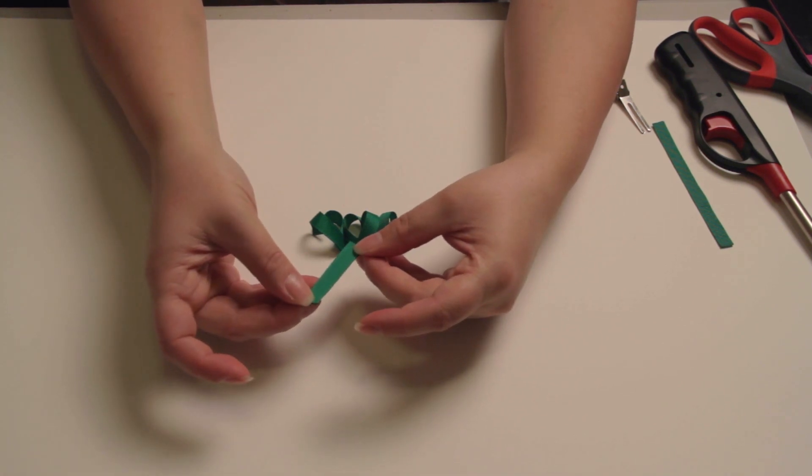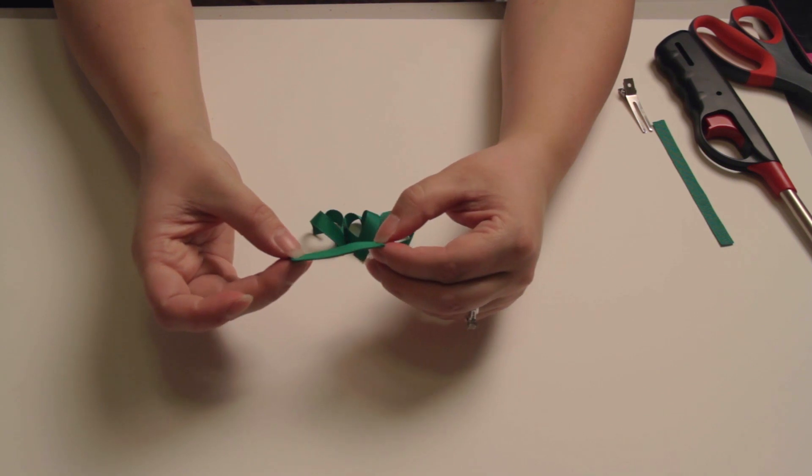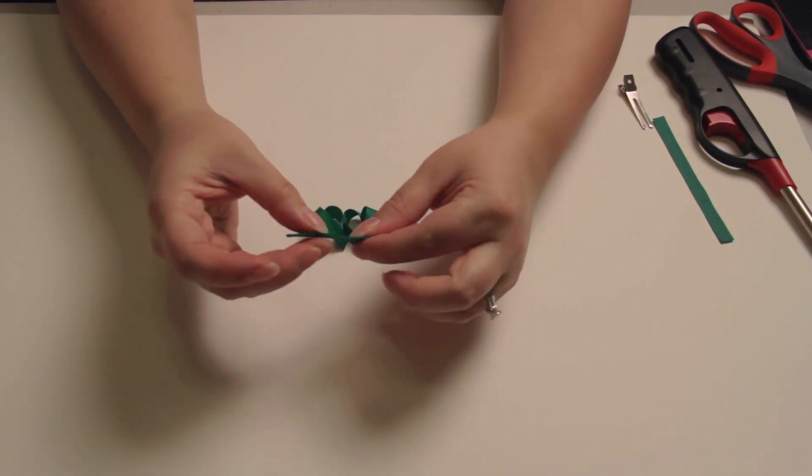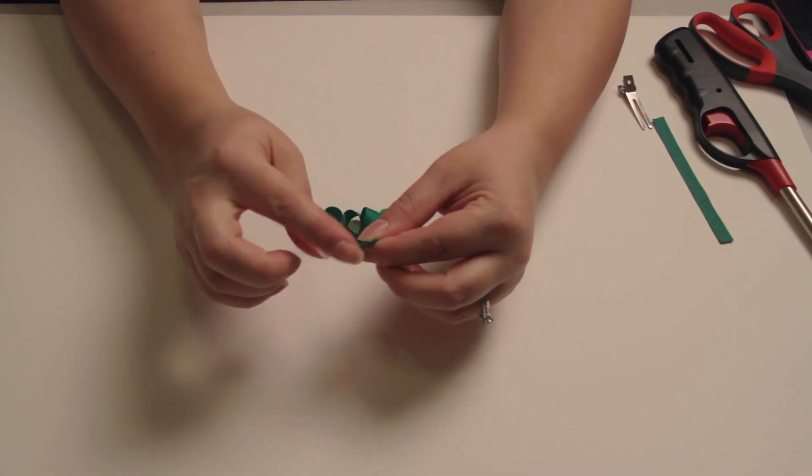This is going to be the stem of the clover. The top part of your stem is going to be where the two ends meet. The bottom part of your stem is where it's folded.